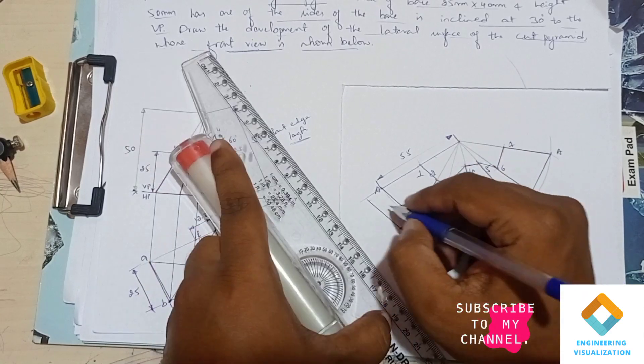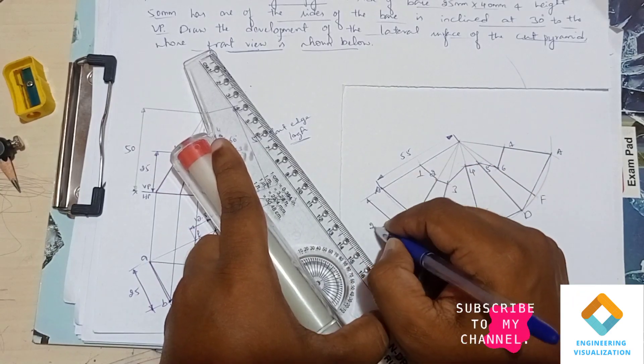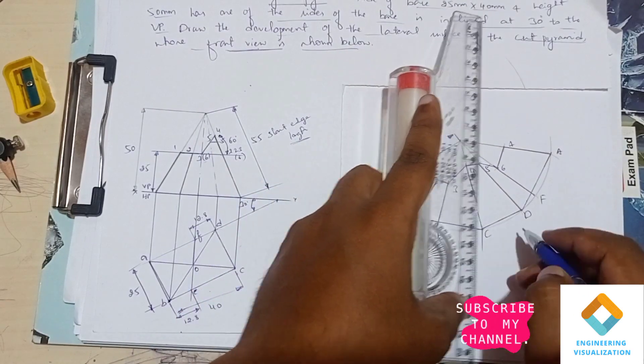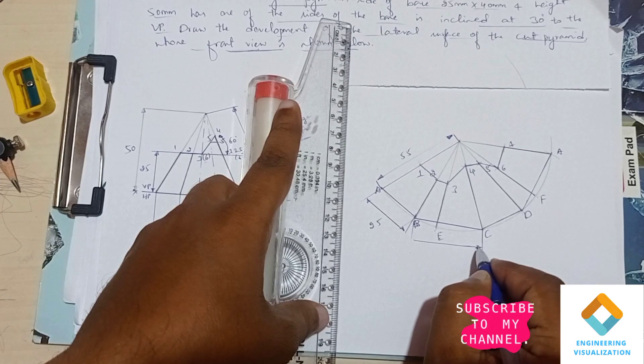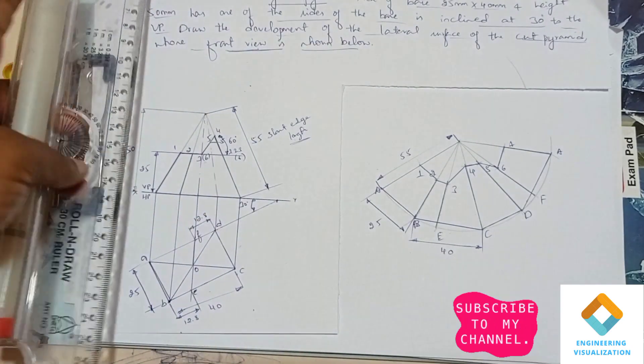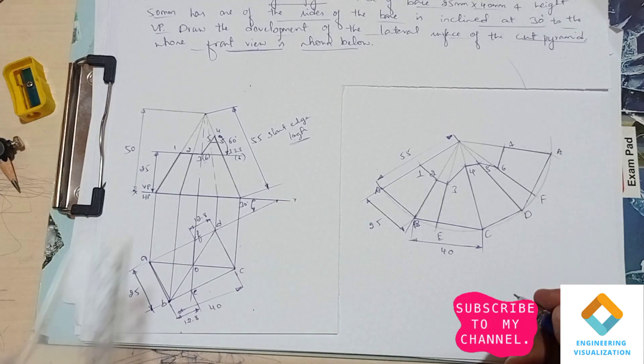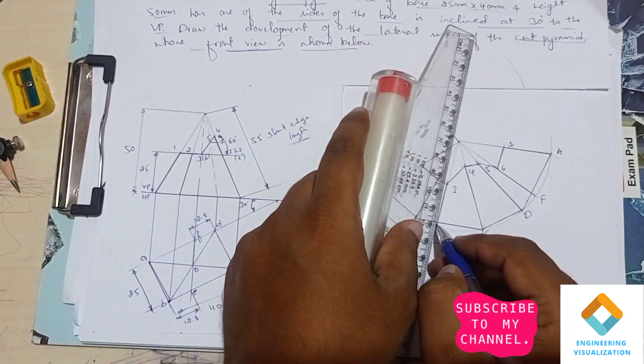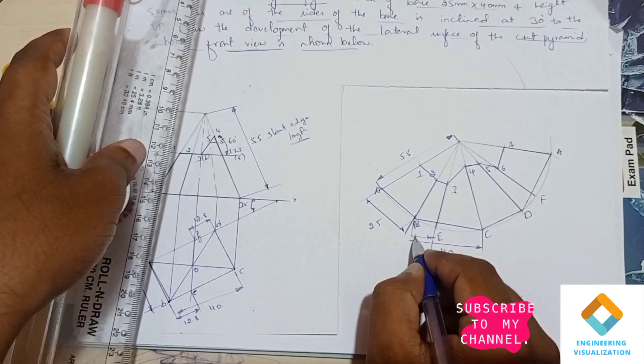Now we can mention the dimension. From A to B it is 25mm. Mention the dimension. And from B to C it is 40mm because it is a development of a rectangular pyramid.